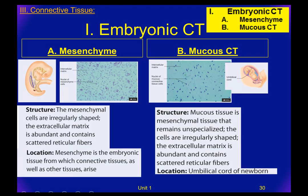Let's talk embryonic first. You've got mesenchyme and mucous connective tissue. The mesenchymal cells are basically irregularly shaped, with an abundant extracellular matrix containing scattered reticular fibers — not collagen or elastic. This specific tissue is found in a developing embryo and serves as the stem cell starting point for connective tissues.